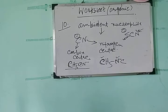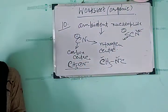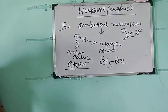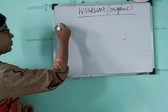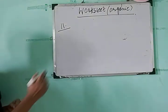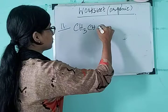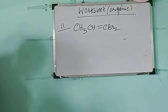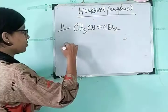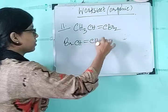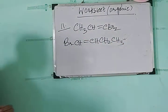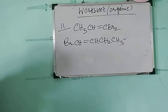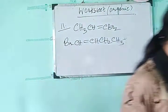The next question is question number eleven about geometrical isomerism. Two structures are given and you have to identify which one can exhibit geometrical isomerism. The structures are: CH₃CH=CBr₂ and CH=CH with CH₂CH₃ groups.